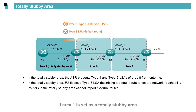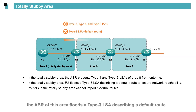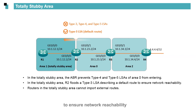If Area 1 is set as a totally stubby area, Type 3, Type 4, and Type 5 LSAs cannot enter this area. In a totally stubby area, the ABR floods a Type 3 LSA describing a default route to ensure network reachability.